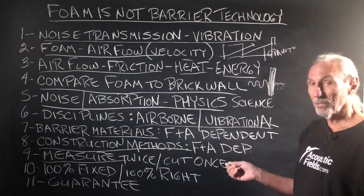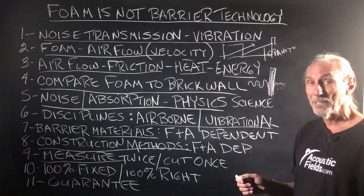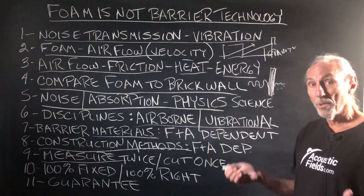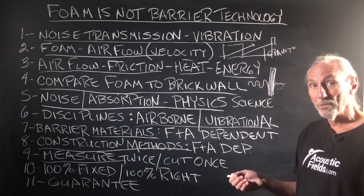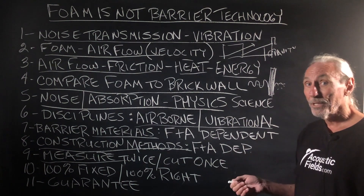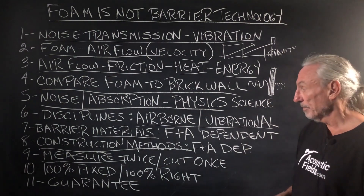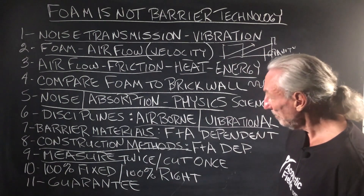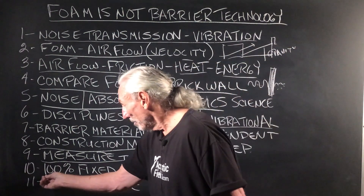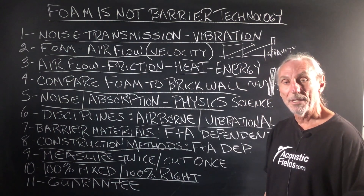Measure, measure, measure. We have programs you can use to measure with your cell phone — it's very easy. We have online forms you can fill out, send to us, and we will tell you the materials you need for the barrier, how to construct them, and we'll send you a drawing. It's all part of our design service. Measure twice, cut once. Once the noise issue is done, it's 100% fixed and 100% right.